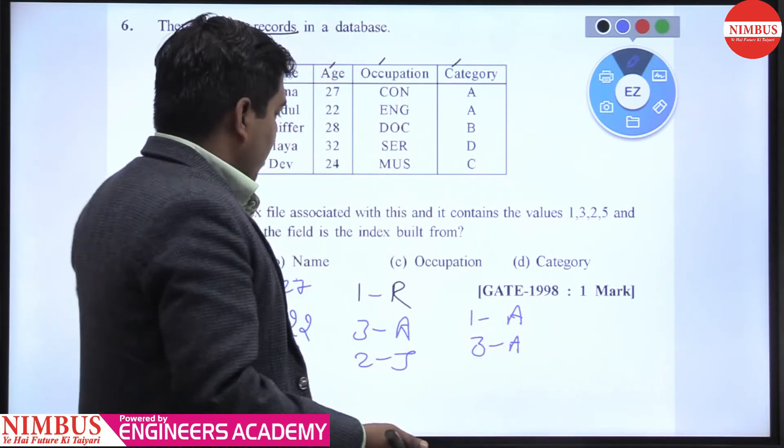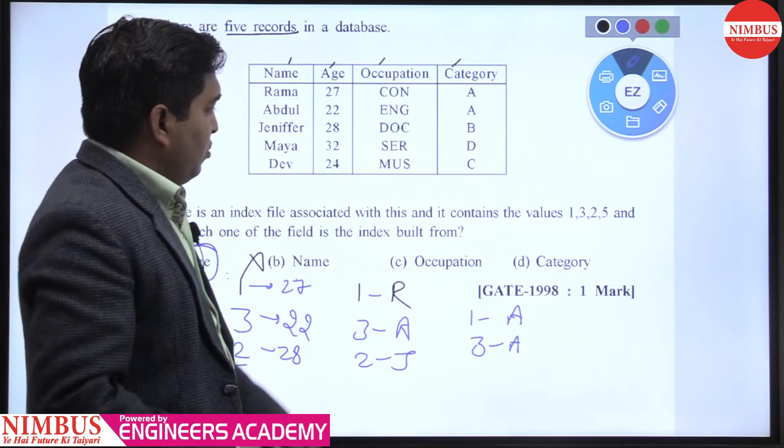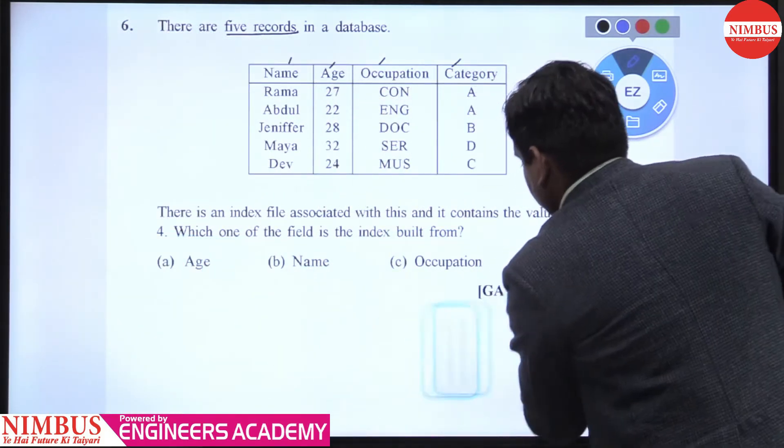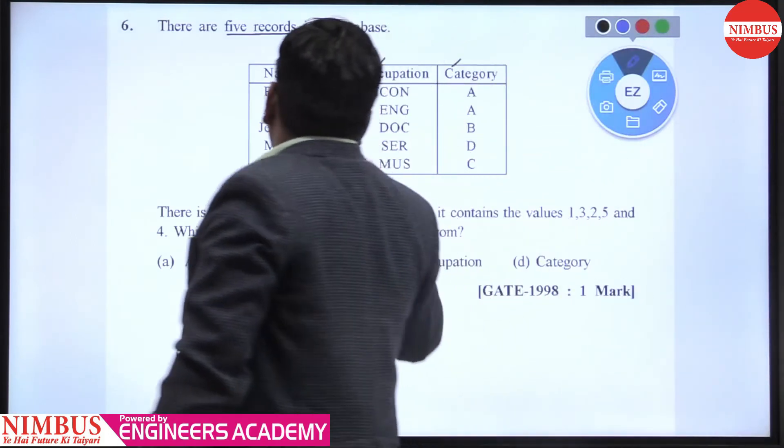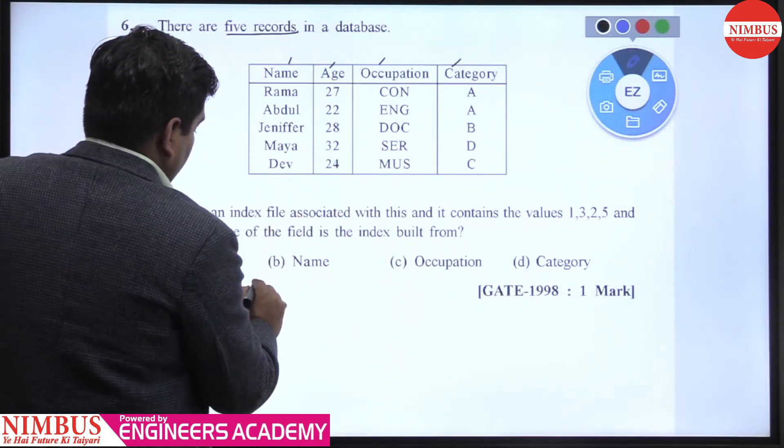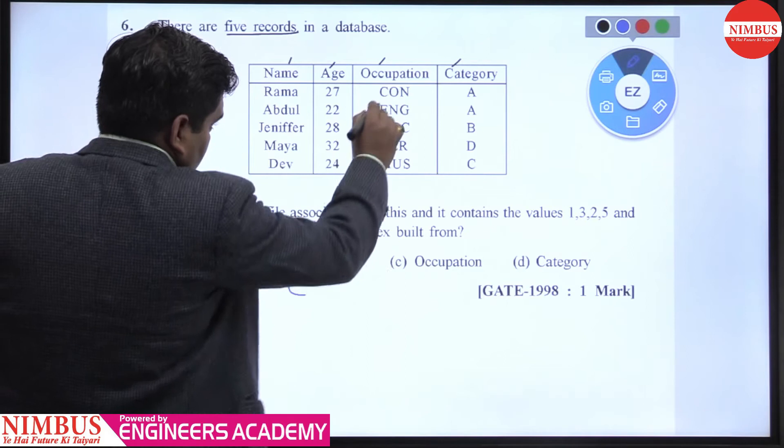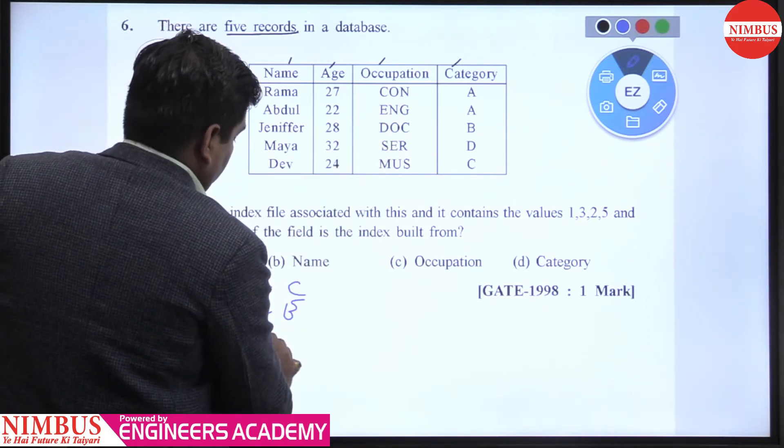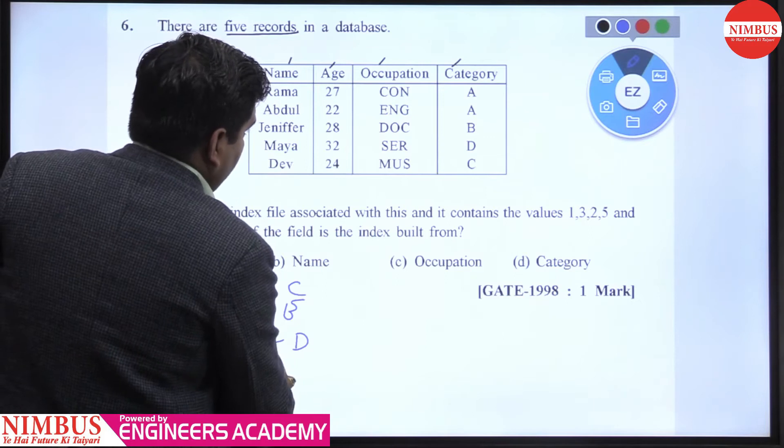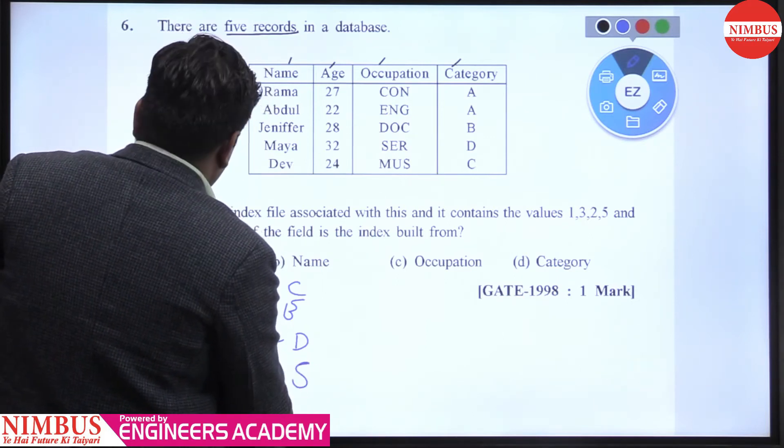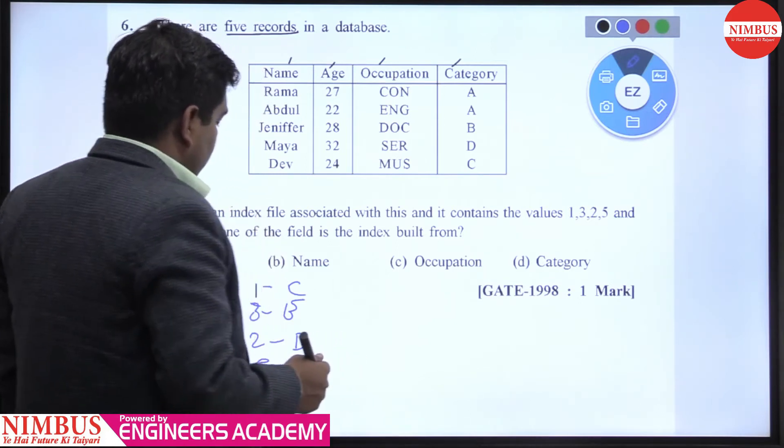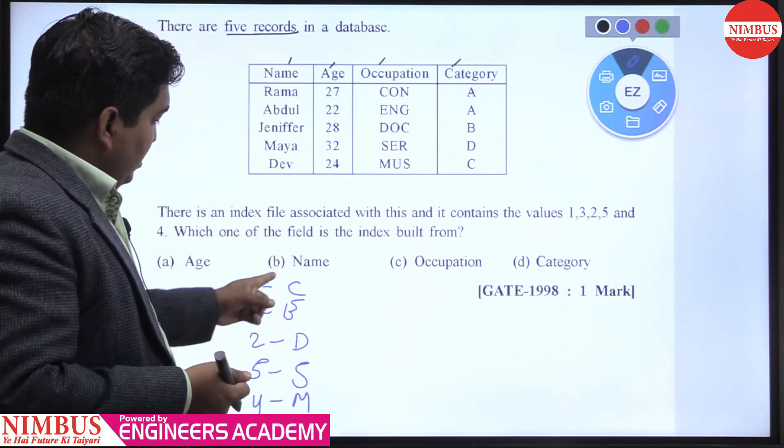And now we take the occupation. If we take the occupation, one is given for C and three is given for E and two is given for D and five is given for S and four is given for M.